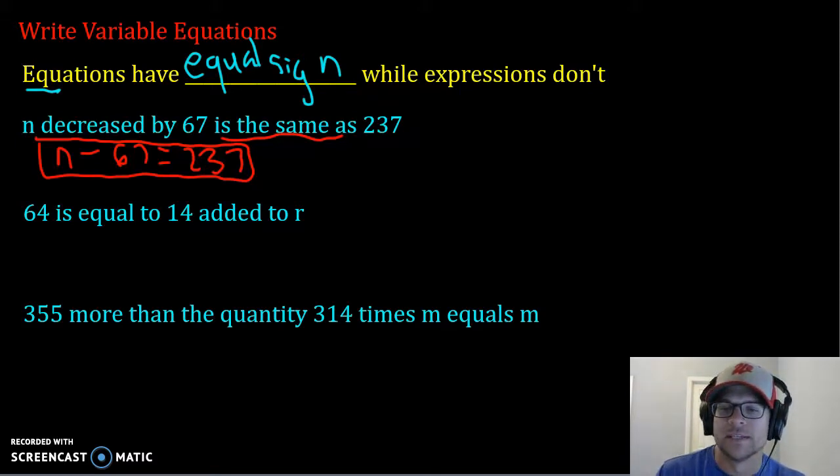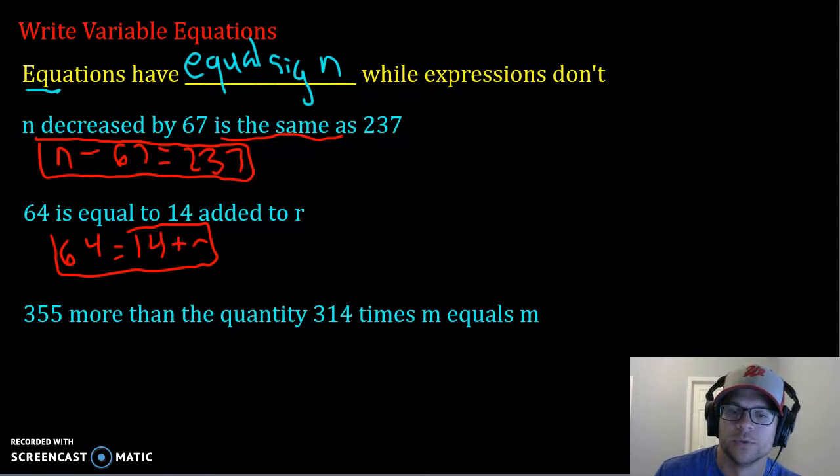Then we have 64 is equal to 14 added to R. It straight up tells you the word is equal to. So you're going to write 64 equals 14 added to R. Add is the same thing as addition or plus. There you go. 64 equals 14 plus R.